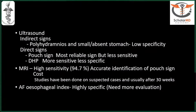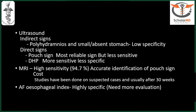Summary of ultrasound signs for esophageal atresia: indirect signs are polyhydramnios and small or absent stomach — low specificity. Direct signs: the pouch sign is the most reliable but less sensitive. The dilated hypopharynx is more sensitive but less specific. MRI has high sensitivity and accurate identification of the pouch sign, but cost is an important factor. The patients being sent for MRI are already suspected on ultrasound, so the sensitivity appears very high. Most of these cases are done in the third trimester, so we don't really know whether MRI can help at the 19-20 week scan.